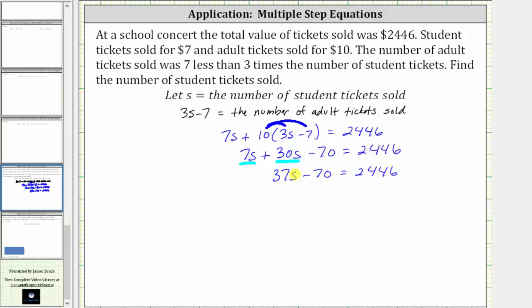The next step is to add or subtract to isolate the variable term. To undo the minus 70, we add 70 to both sides of the equation. Negative 70 plus 70 is zero, so the left side simplifies to 37S. On the right, 2,446 plus 70 is equal to 2,516.